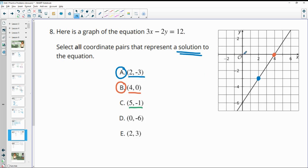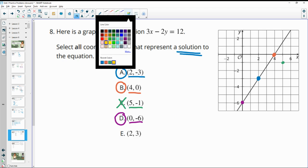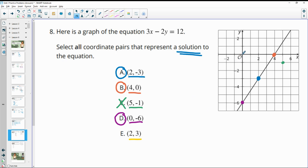5, negative 1. So 5 in the x, down 1 in the y is not on the line. So that is not a solution. 6 is 0 and then down 6. So 0 in the x, negative 6 in the y. That is on our line. And then our final one here is the 0.23. So 2 in the positive x direction, 3 in the positive y direction is not a solution.